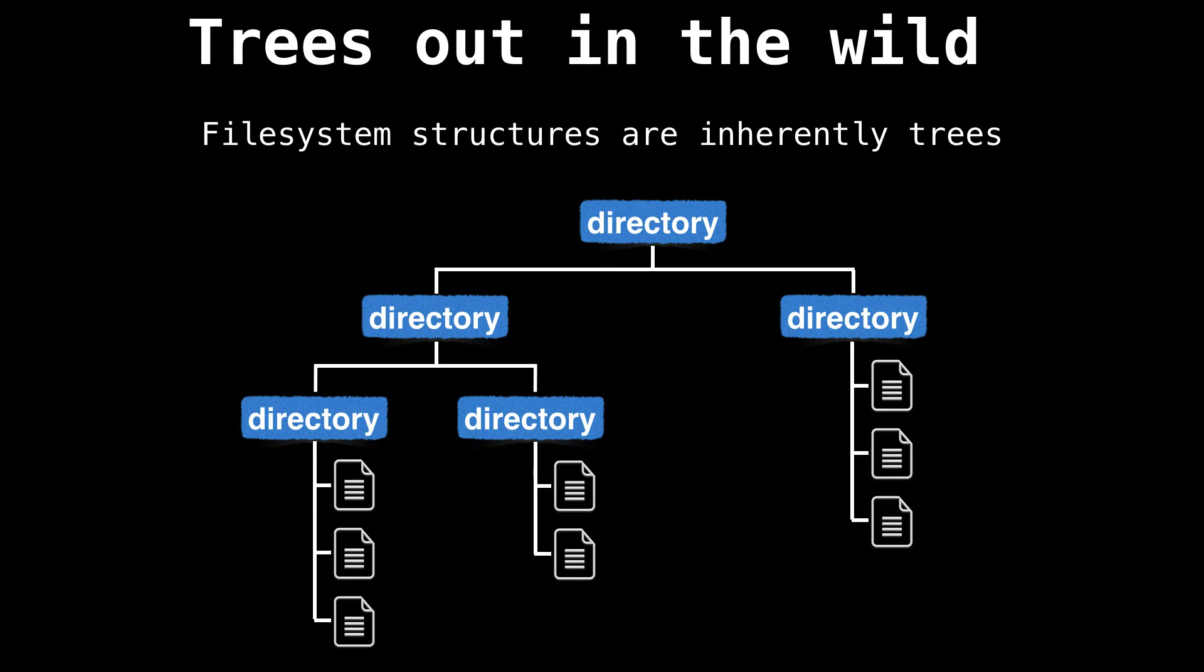All right, now we know what trees are. But where do they appear in computer science and in the real world? Let me give you a few examples of where you might encounter trees. First is your computer's file system, which consists of directories, subdirectories and files, which is inherently a tree.